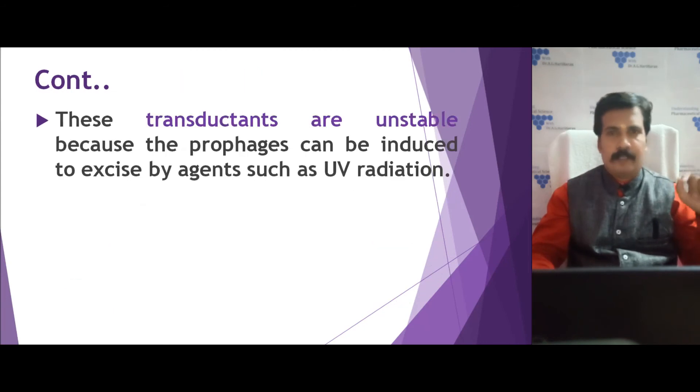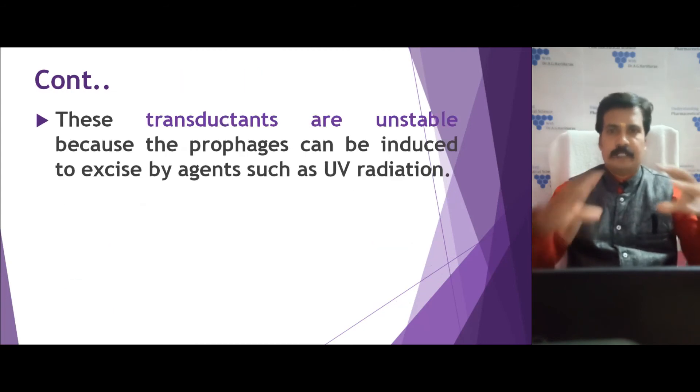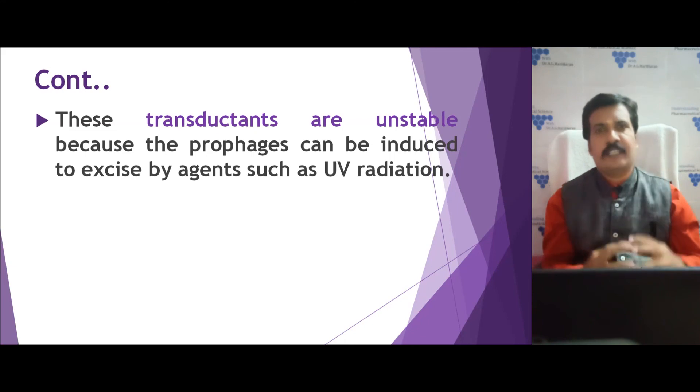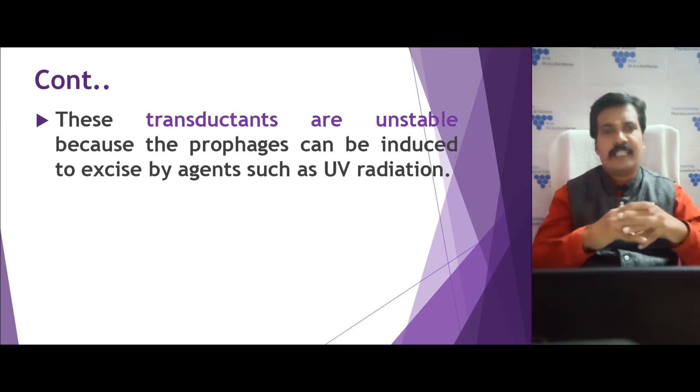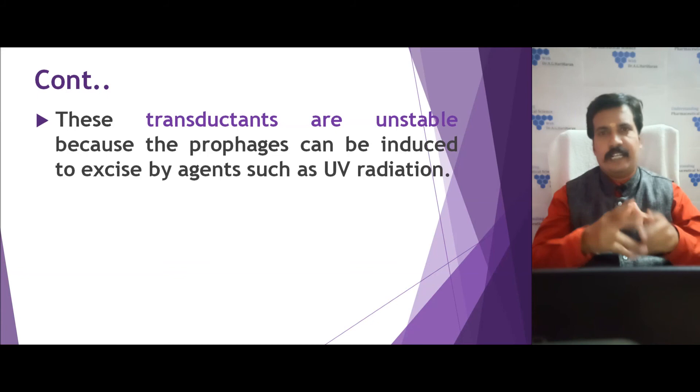The defective lambda phage is called a 'degal' phage because the gal genes are missing from the phage genome. A helper phage is needed — a phage that can help integrate and reproduce. Without the helper phage, the prophage will integrate but it is unstable. UV light exposure can induce further changes.